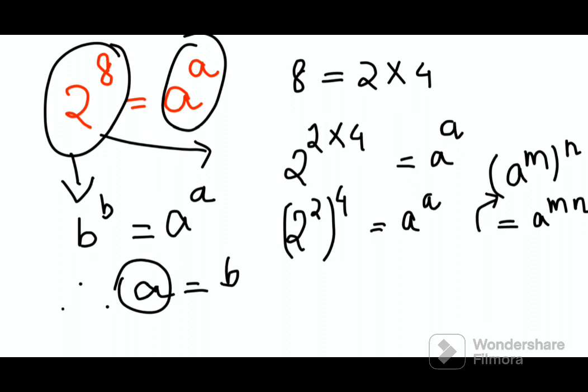So now if you look closely, this 2 raised to 2 is coming out to be 4. 4 raised to 4 is equals to A raised to A. Therefore we can say A is nothing but 4.